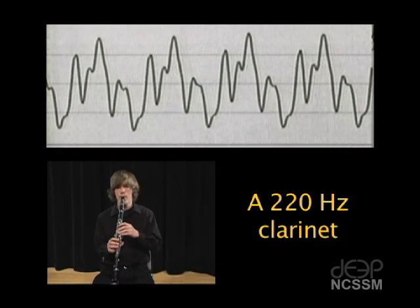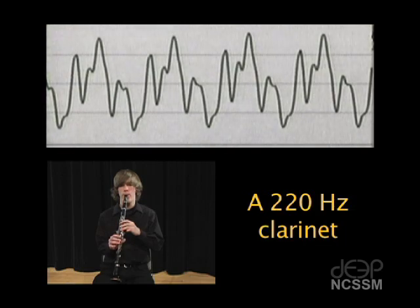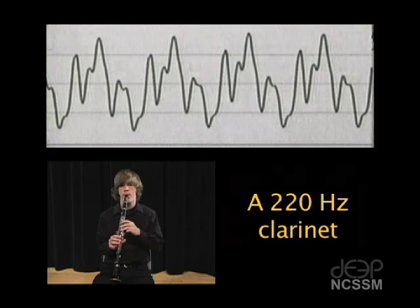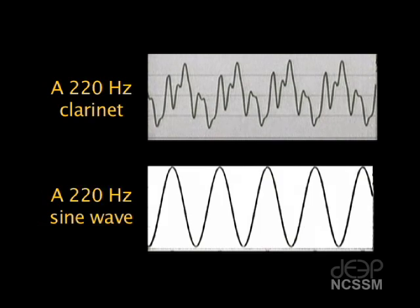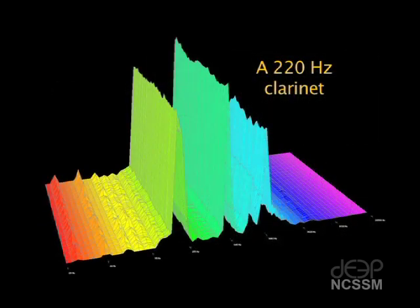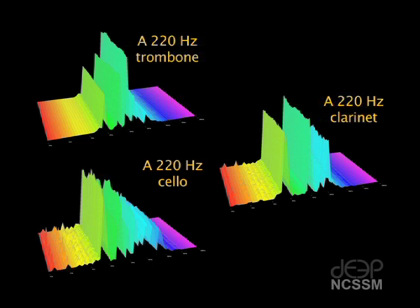Now let's look at the wave from another instrument. As we look at the graph of the wave and compare it to a sine wave, it is clearly not a sine wave. This complex wave is not the same as the cello or the trombone. Let's take a look at these in 3D. Note the similarities between the harmonics in the cello, the trombone, and the clarinet — and note the differences. Take a moment to write down one similarity and one difference that you can see. Each of these instruments has a unique set of harmonics that combine to form the timbre of that instrument.